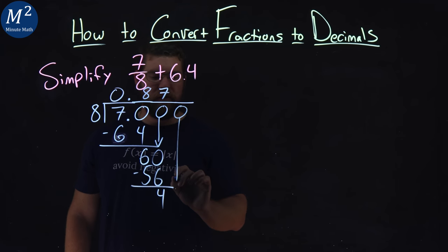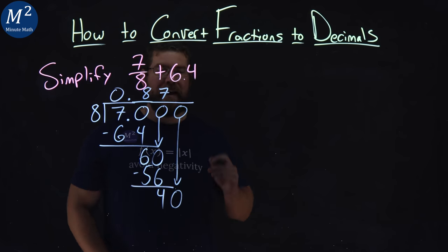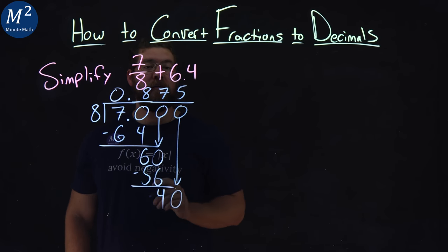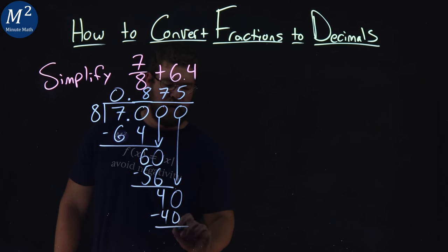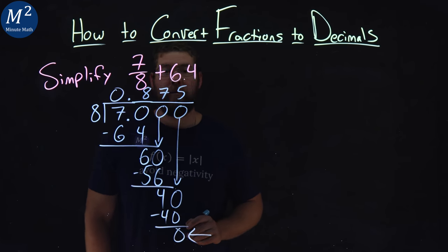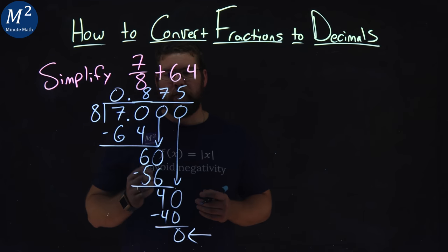Again, another place value. Bring it down to a 0. Does 8 go into 40? And that actually goes in exactly 5 times. 5 times 8 is 40. Subtract the two numbers, get a 0, and now we know we're done. If you end with a 0, you're definitely done. We got an exact decimal here.